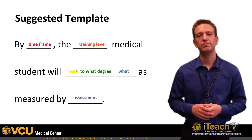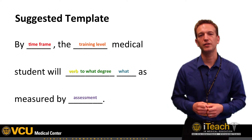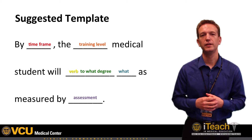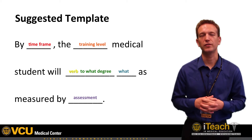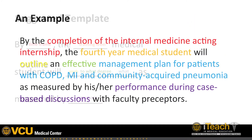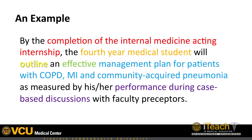Practically speaking, how does one translate these characteristics to a final product? I would propose using the following template to help construct each objective. Here's an example using that template: by the completion of the Internal Medicine Acting Internship, the fourth-year medical student will outline an effective management plan for patients with COPD, MI, and community-acquired pneumonia, as measured by his or her performance during case-based discussions with faculty preceptors.